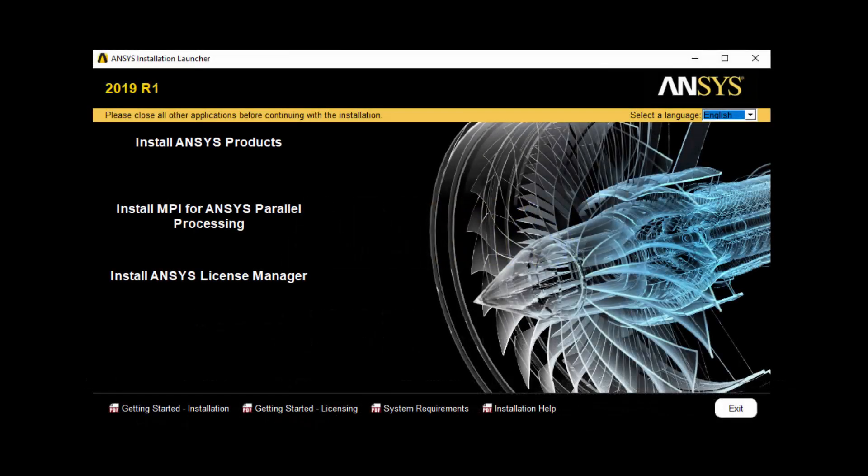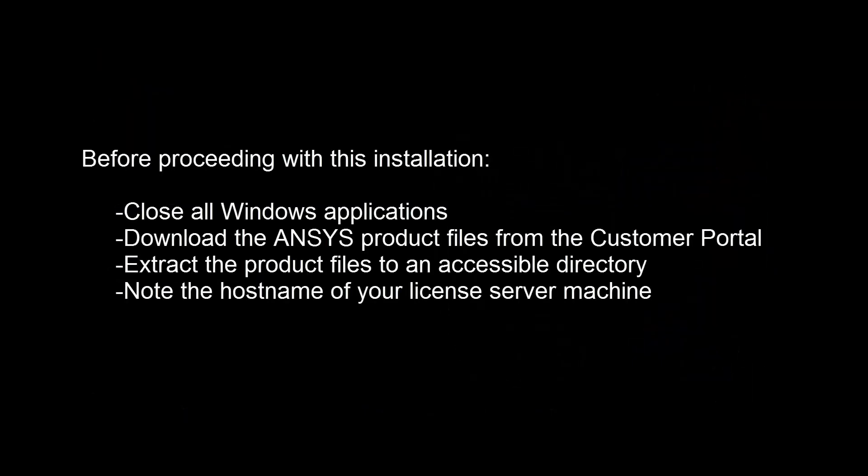In this demonstration, you'll learn how to perform the product installation for ANSYS 2019 releases on the Windows platform. Before proceeding, close all Windows applications. You will need to download the product files from the ANSYS customer community and extract them to an accessible directory. Have the hostname of the license server machine available. This tutorial will begin in the directory containing the extracted installation files.